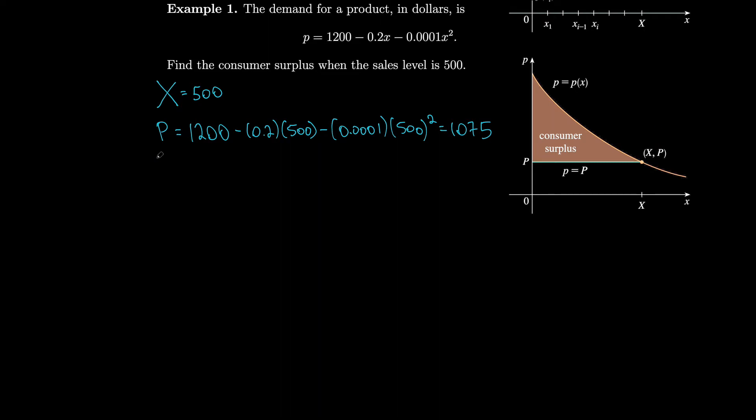Let's do our integral. Our integral will go from zero to capital X, so it goes from zero to 500, and it's of lowercase p the demand function minus our current price. That's from zero to 500 of 1200 minus 0.2x minus 0.0001x squared minus 1075 dx.